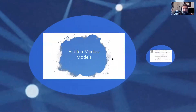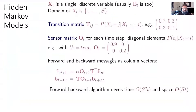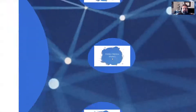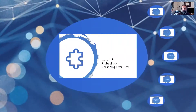Moving on to hidden Markov models — going to skim right over this. It's around temporal processing and the concept of a domain of X sub T, with evidence E sub T going from 1 to S, the things in the domain of X sub T, along with a transition matrix and a few other things. Be familiar that it is associated with probabilistic reasoning over time.